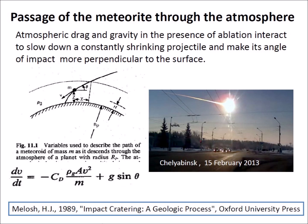The meteor over Chelyabinsk, Russia in 2013 provided an example of the atmospheric effect on a small asteroid moving at 19 kilometers per second. A large asteroid or comet would radiate intensely, start fires, and send powerful shock waves to the surface during its passage through the atmosphere.